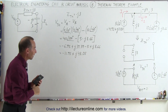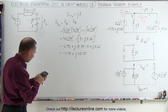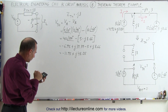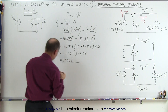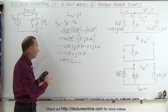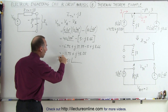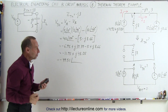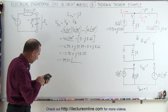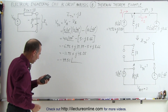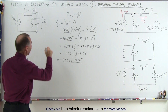Combining the real and imaginary parts gives us minus 11.95 plus J48.05. Converting back to magnitude and phase angle: the square root of 11.95 squared plus 48.05 squared gives 49.51. For the phase angle, we take the inverse tangent of 48.05 divided by 11.95, which gives negative 76.03 degrees — so the phase angle is negative 76.03 degrees. That's the Thevenin voltage.